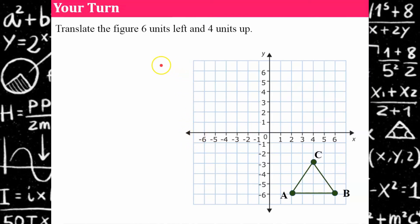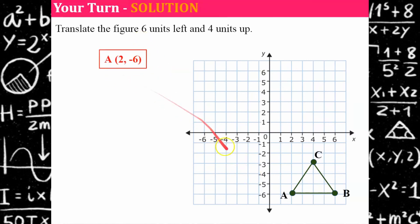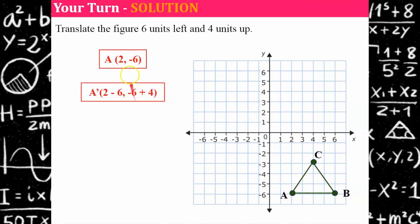Let's see how you did. I'll start by identifying that vertex A is at (2, −6). Going six units to the left is going negative, so I subtract six. Four up means a vertical translation upward — adding four.